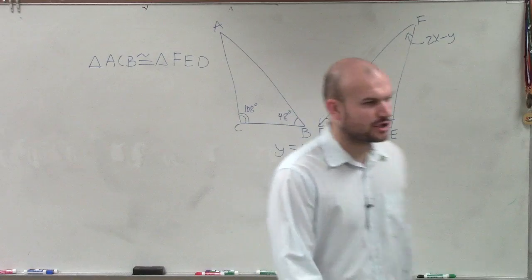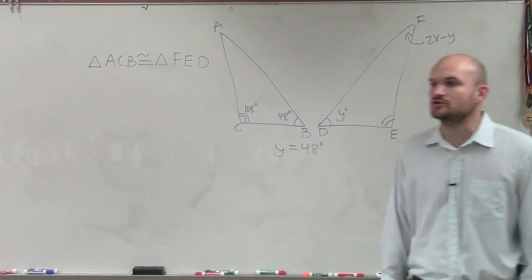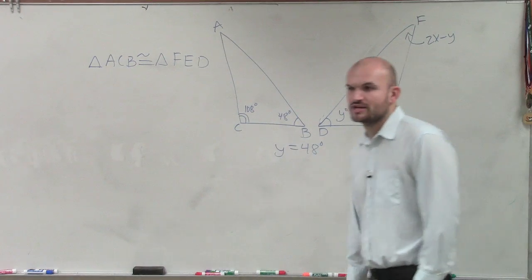Because they're equal, those are corresponding angles. And since our triangles are congruent, we know those angles are equal in measure.